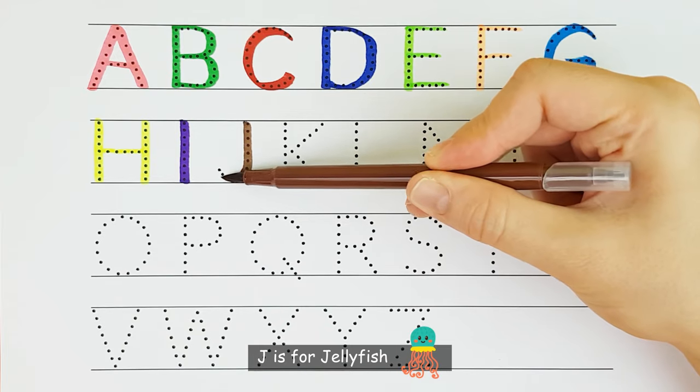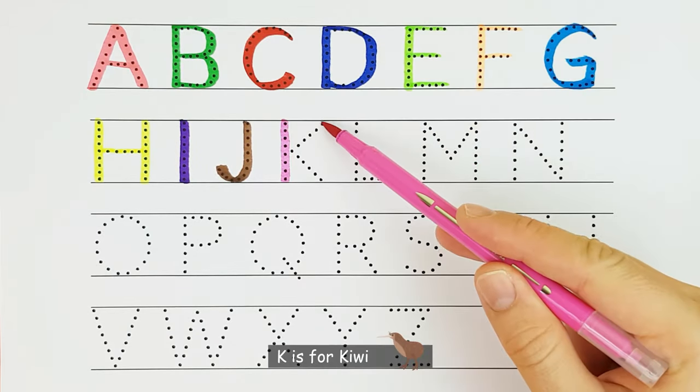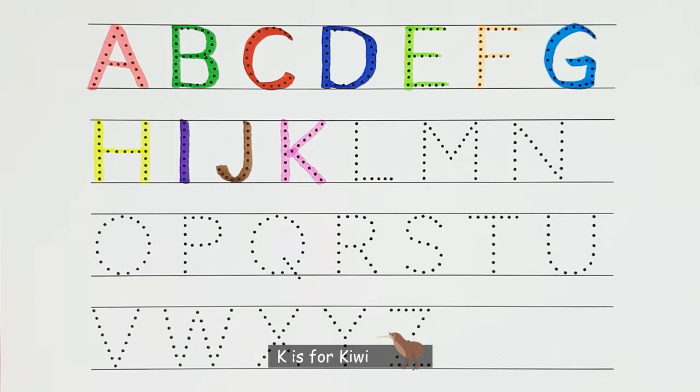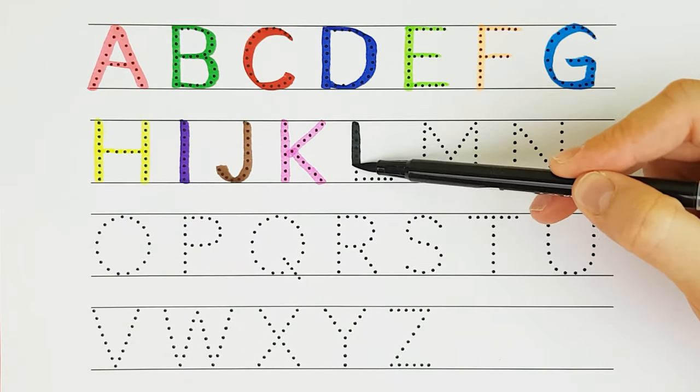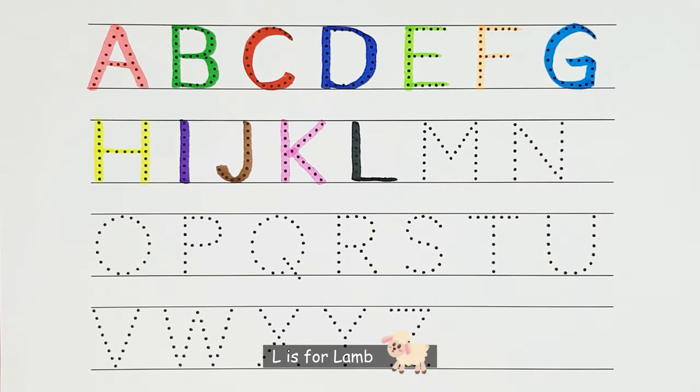J. J is for Jellyfish. J. K. K is for Kiwi. K. L. L is for Lamb. L.